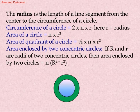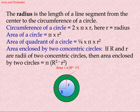The radius is the length of a line segment from the center to the circumference of a circle. Circumference of a circle equals 2 pi r, where r equals radius. Area of a circle equals pi r squared. Area of a quadrant of a circle equals one-quarter pi r squared. Area enclosed by two concentric circles: if capital R and small r are the radii of two concentric circles, then the area enclosed equals pi times (R squared minus r squared).